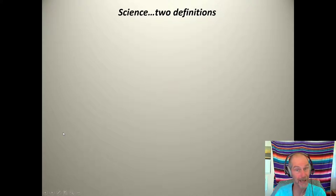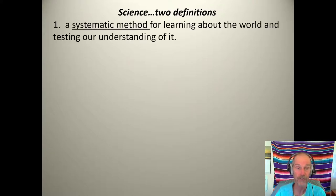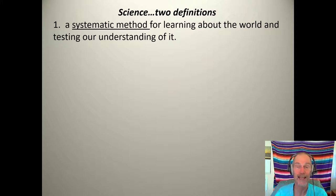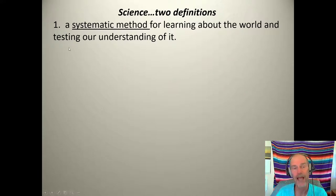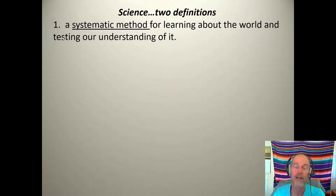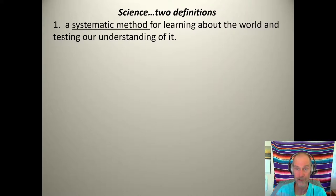Science has two definitions. First, it's a systematic method for learning about the world and testing our understanding of it — it's systematic, with steps, and also a way of testing hypotheses. We'll talk more about hypothesis testing when we get to statistics, because that's what scientists do. They measure things, get numbers, and use statistics to deal with those numbers. Some of you are nervous about statistics — please don't be. I'll give you a user's guide so you can actually use it.